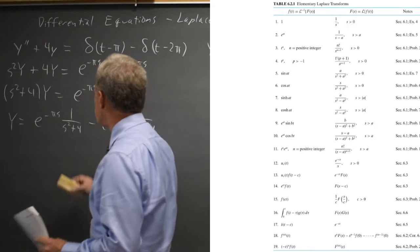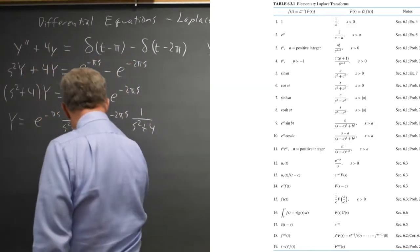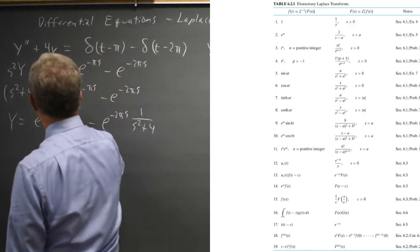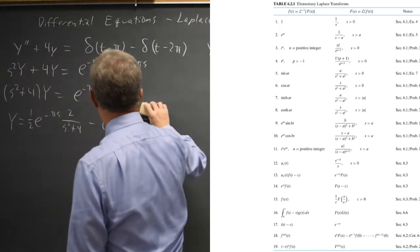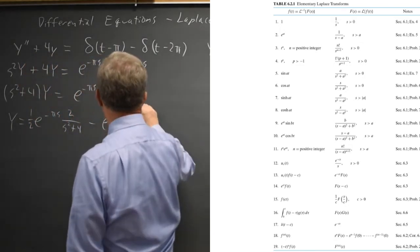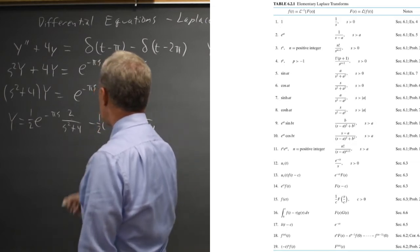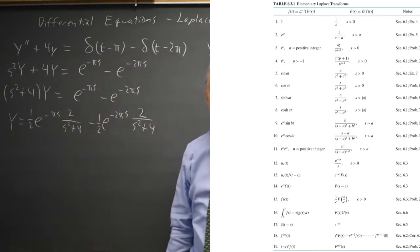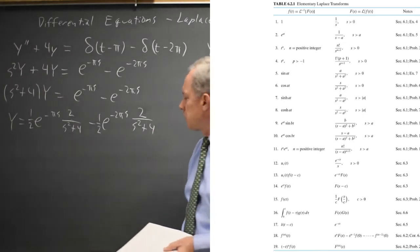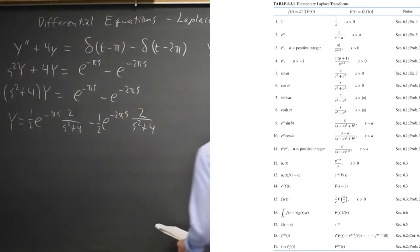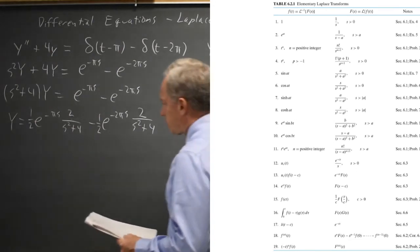I'm going to make that numerator a 2 and put a 1 half out front, and the same for the second one. I found it much easier to make my transform of the solution exactly match the lines in the table, so I don't mess up my coefficients. Now looking at lines 5 and 13, I'll often write down what lines I'm using just so I can catch any errors later.